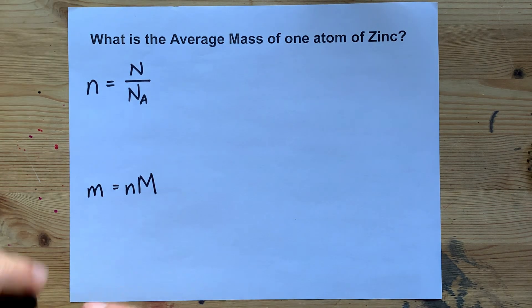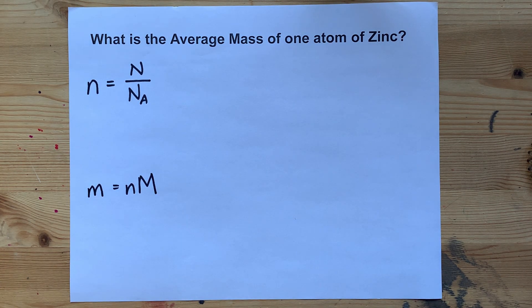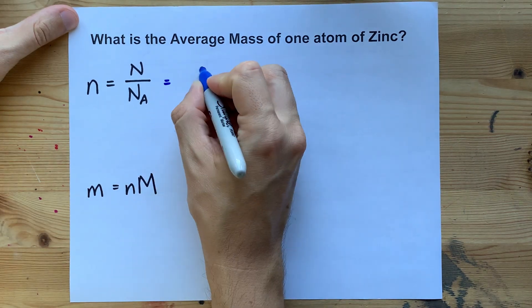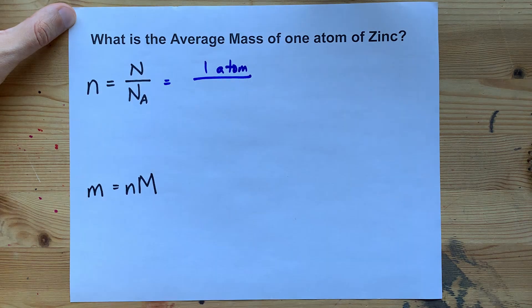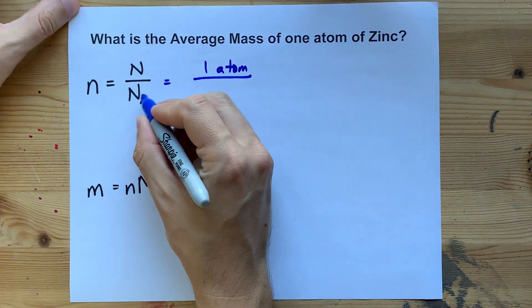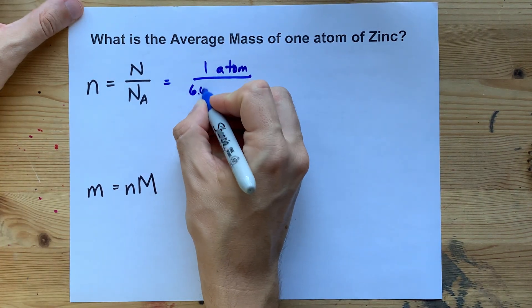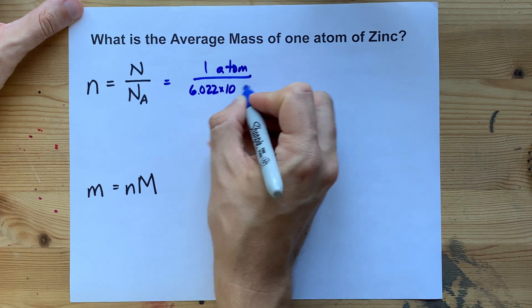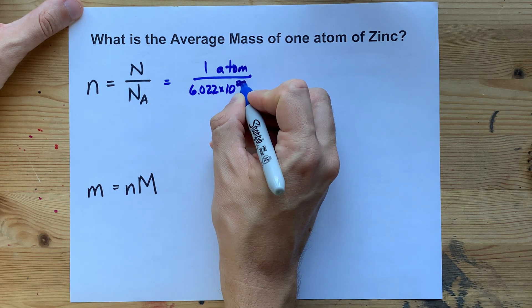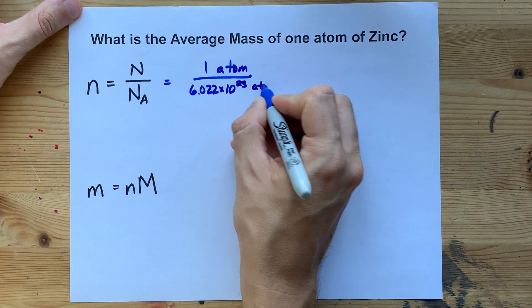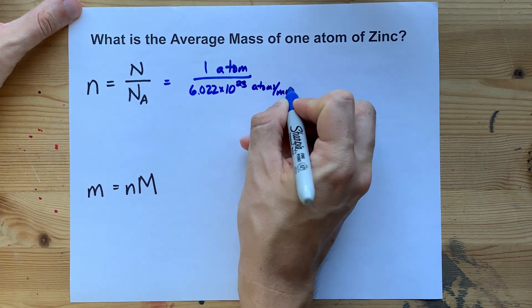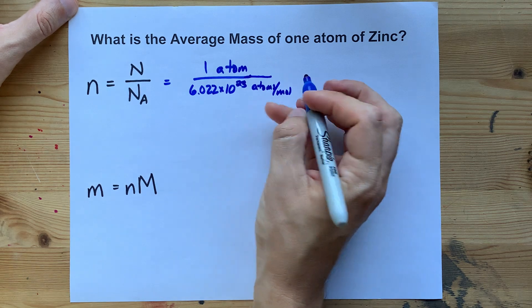And you're going to use the molar mass of zinc. So let's do this together. We have one atom because that's what we're being asked for the mass of. And 6.022 times 10 to the 23 is Avogadro's number. That is the number of atoms per mole if you want to use those units.